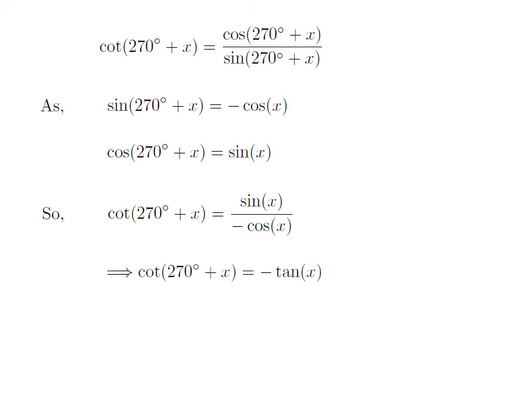As sine of x divided by cosine of x is equal to tangent of x, so cot 270 degree plus x is equal to minus tangent of x.